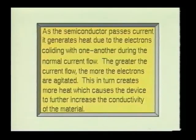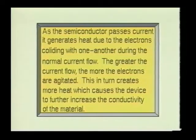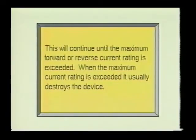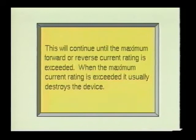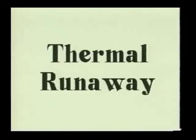As the semiconductor passes current, it generates heat due to the electrons colliding with one another during normal current flow. The greater the current flow, the more the electrons are agitated. This in turn creates more heat, which causes the device to further increase the conductivity of the material. This will continue until the maximum forward or reverse current rating is exceeded, which usually destroys the device. This phenomenon is referred to as thermal runaway. Transistors are more susceptible to this effect than diodes.